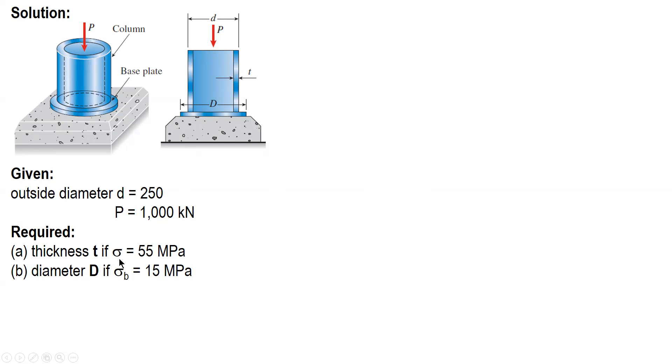So for letter A, compressive stress in the steel column. So P is already given 1,000. Stress is also given 55 MPa. So the unknown is A, the area.